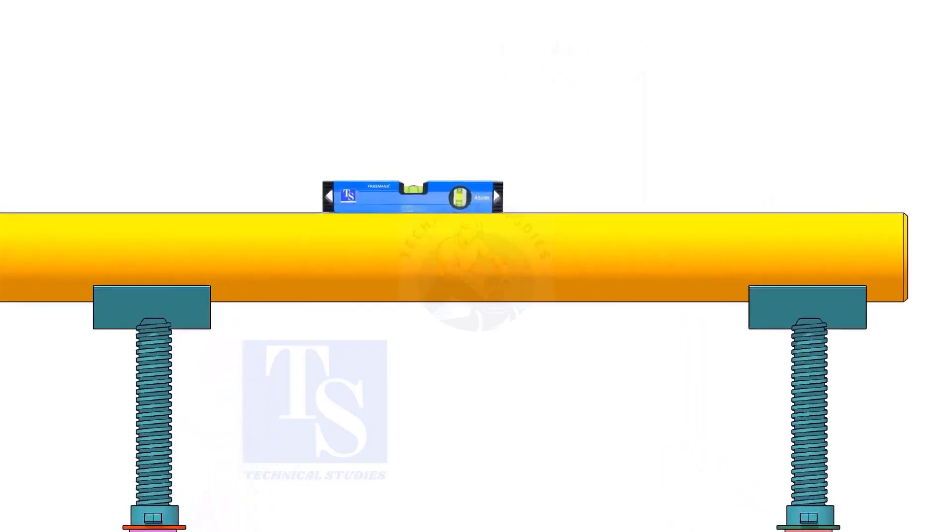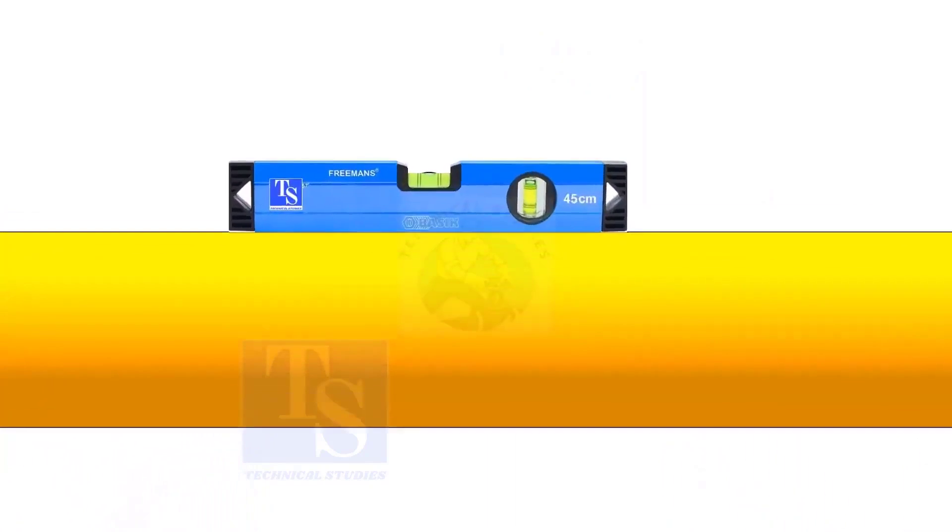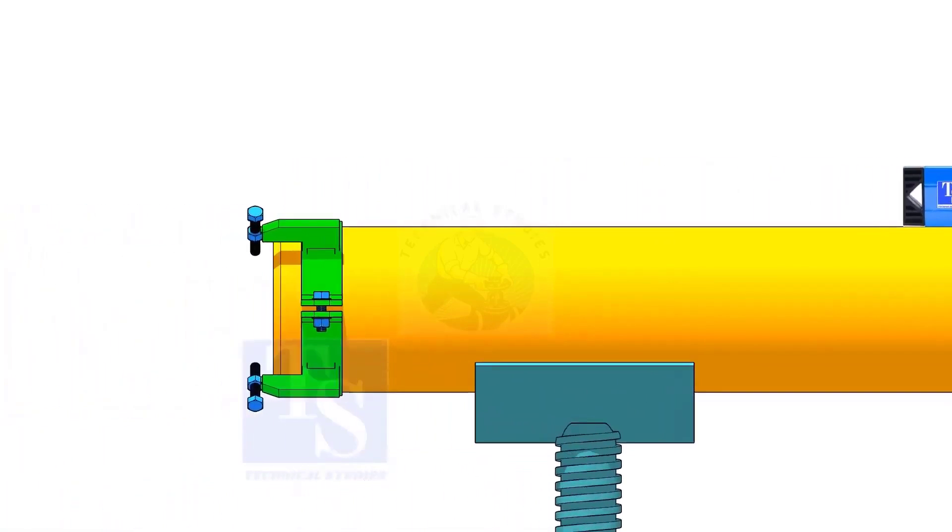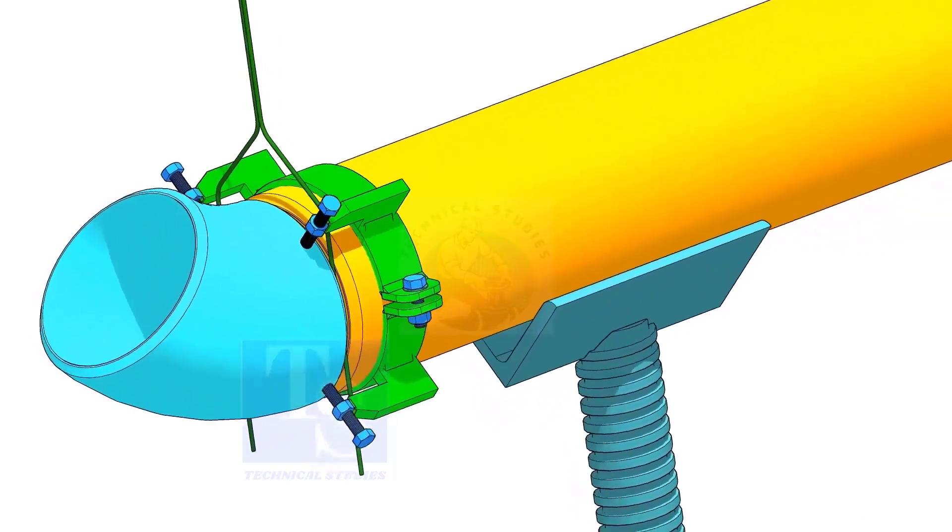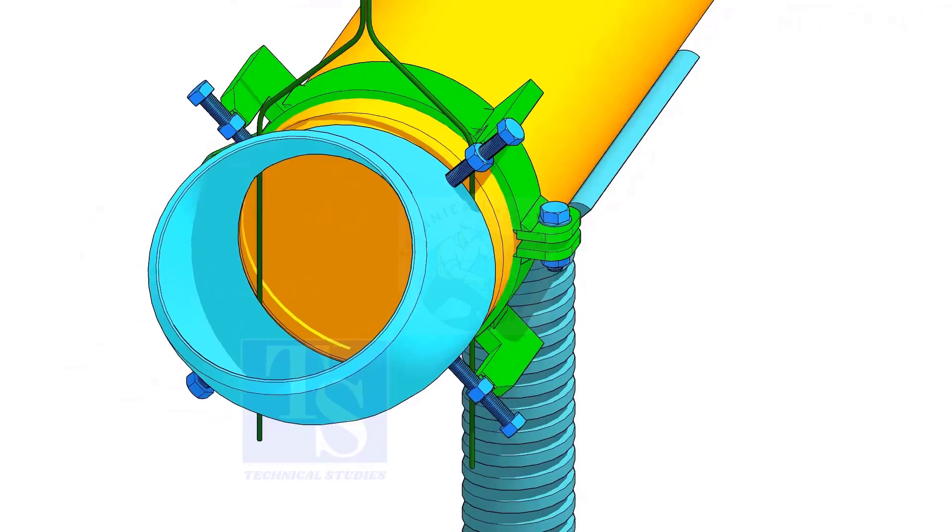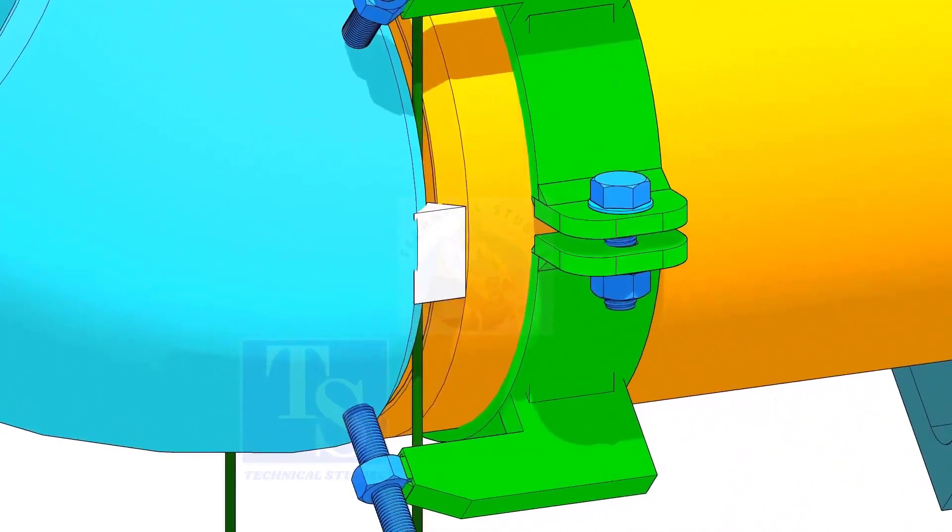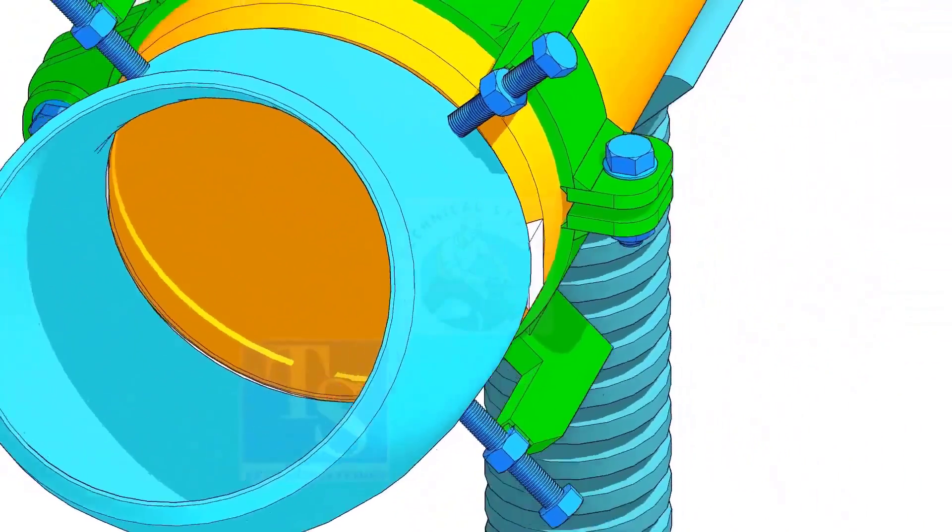This time, you need to level the pipe. After setting the gap and the overlap, tack weld on both sides of the joint.